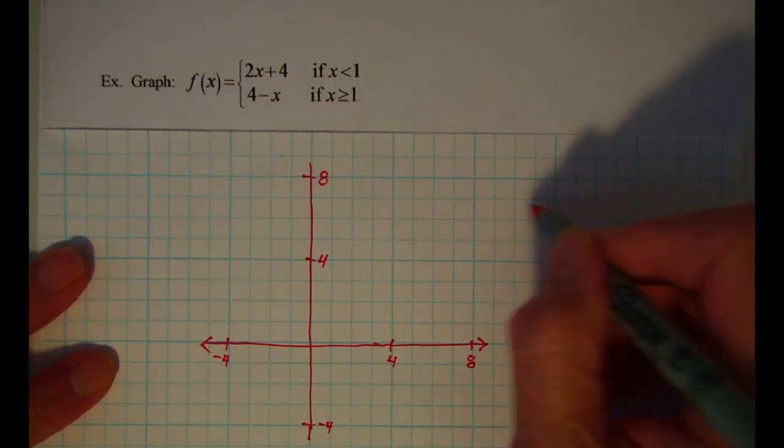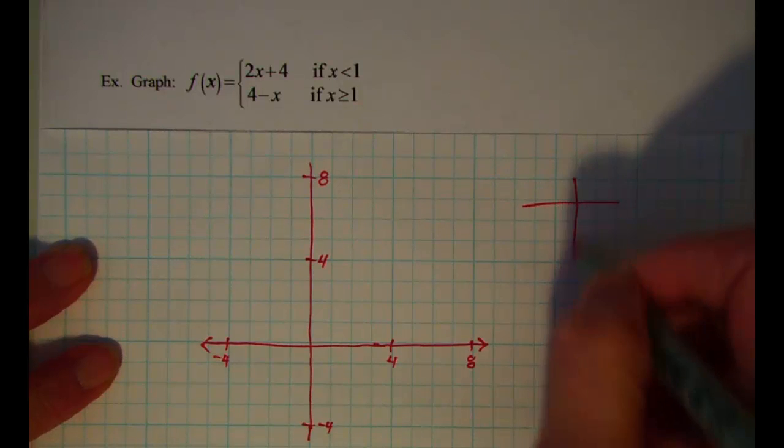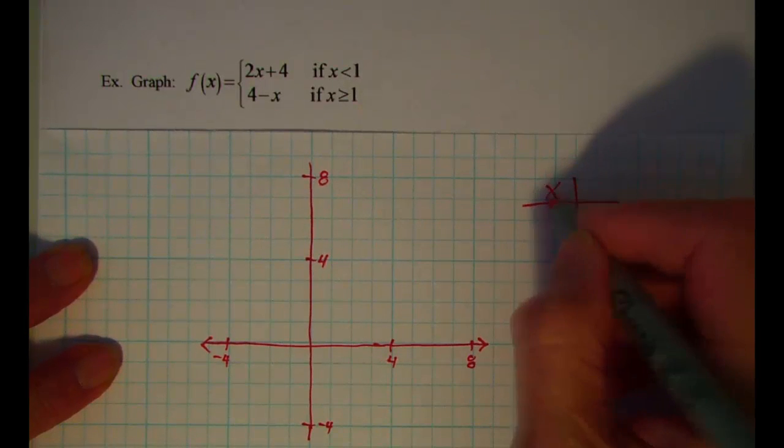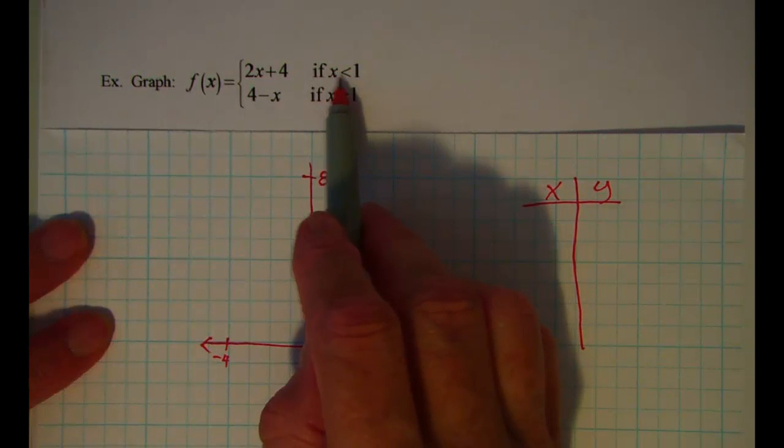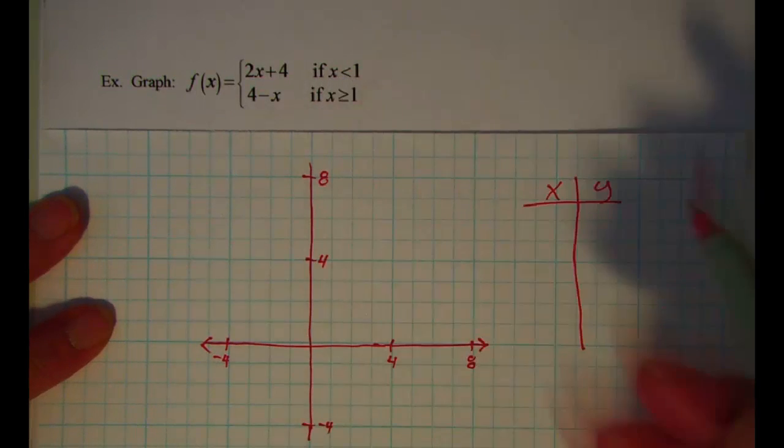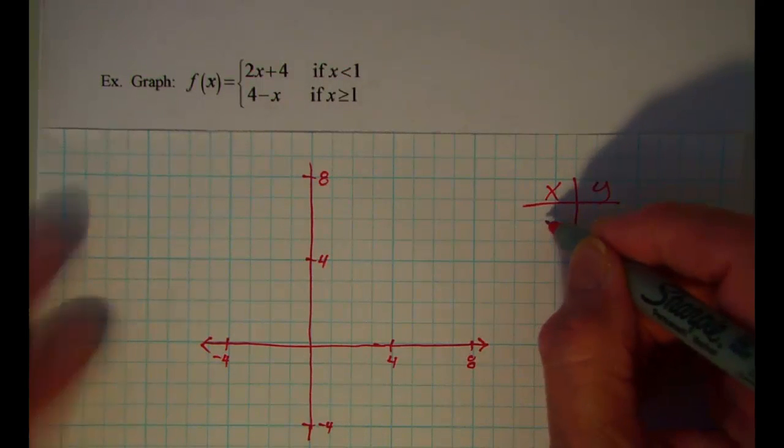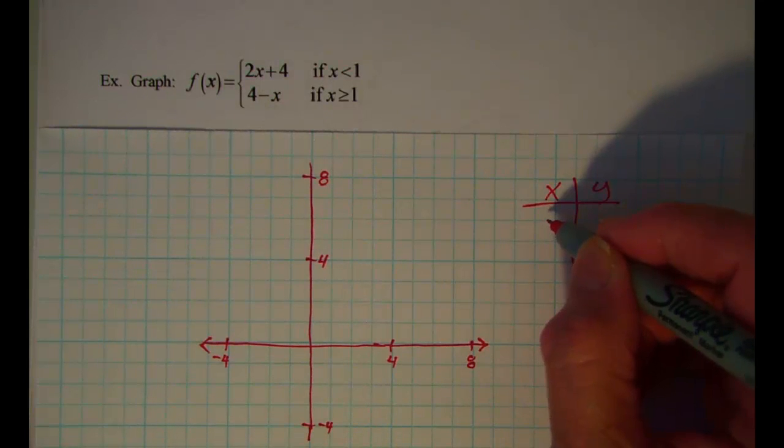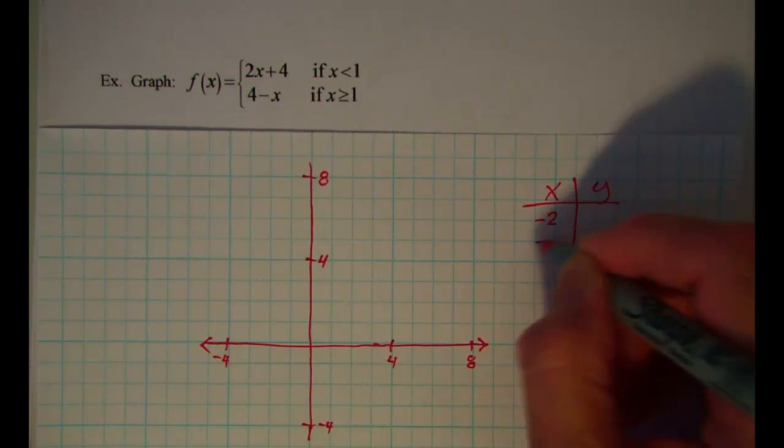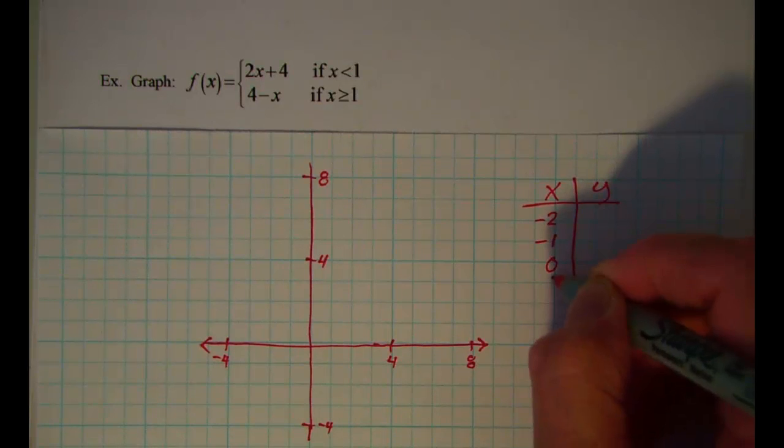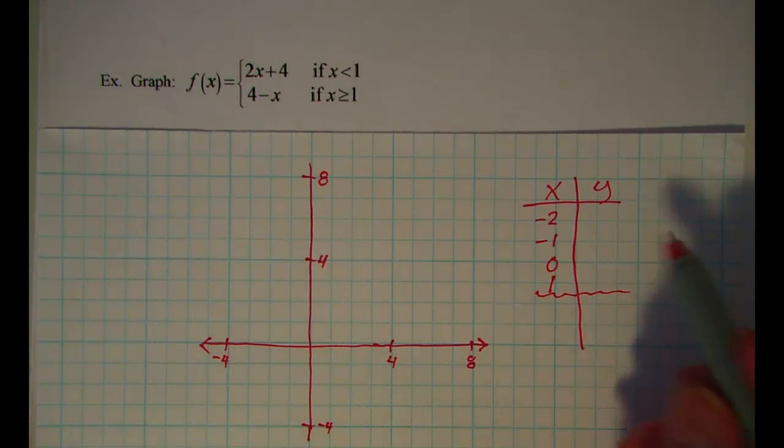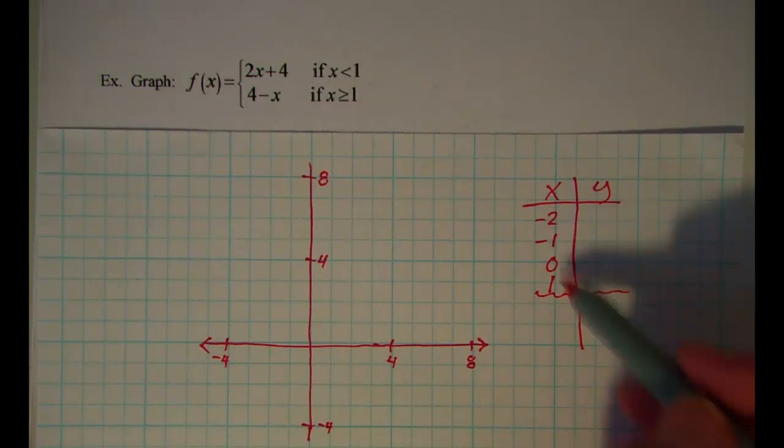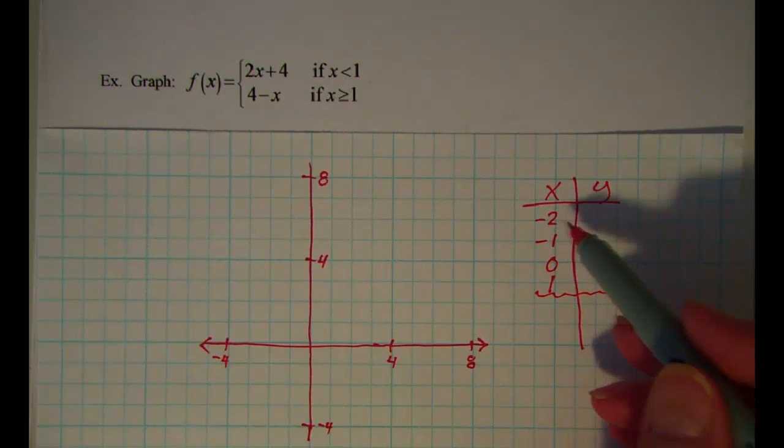So I'm going to set up a t-chart and I'm going to pick a few numbers to the left of 1. So when x is negative 2, negative 1, 0, 1. That's my boundary when x is 1. So I'm going to use for these numbers the top rule.